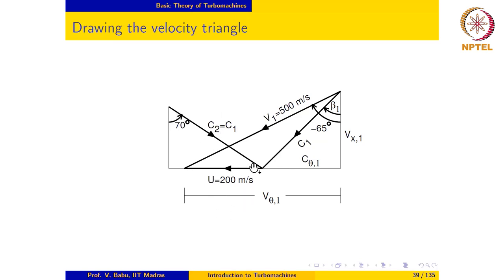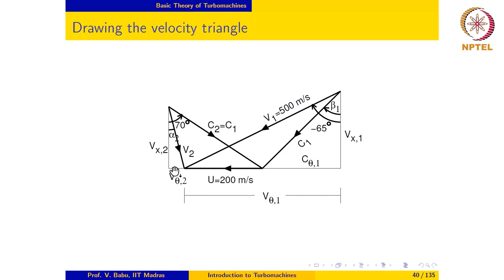We can now complete the exit velocity triangle: v2 equals c2 plus u. The exit absolute velocity vector is drawn accordingly, and the flow angle at exit is positive because the velocity vector v2 is in the counterclockwise direction from the reference direction. The segment v_theta2 and the segment vx2 are identified. We can now use trigonometric relations to compute the required quantities.